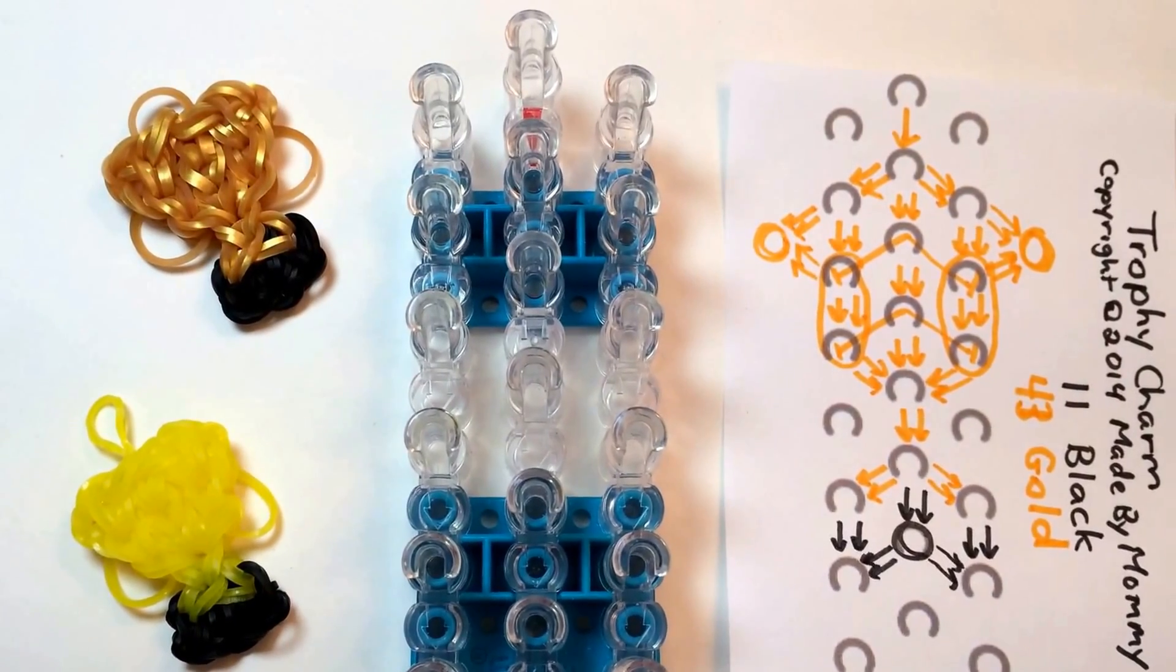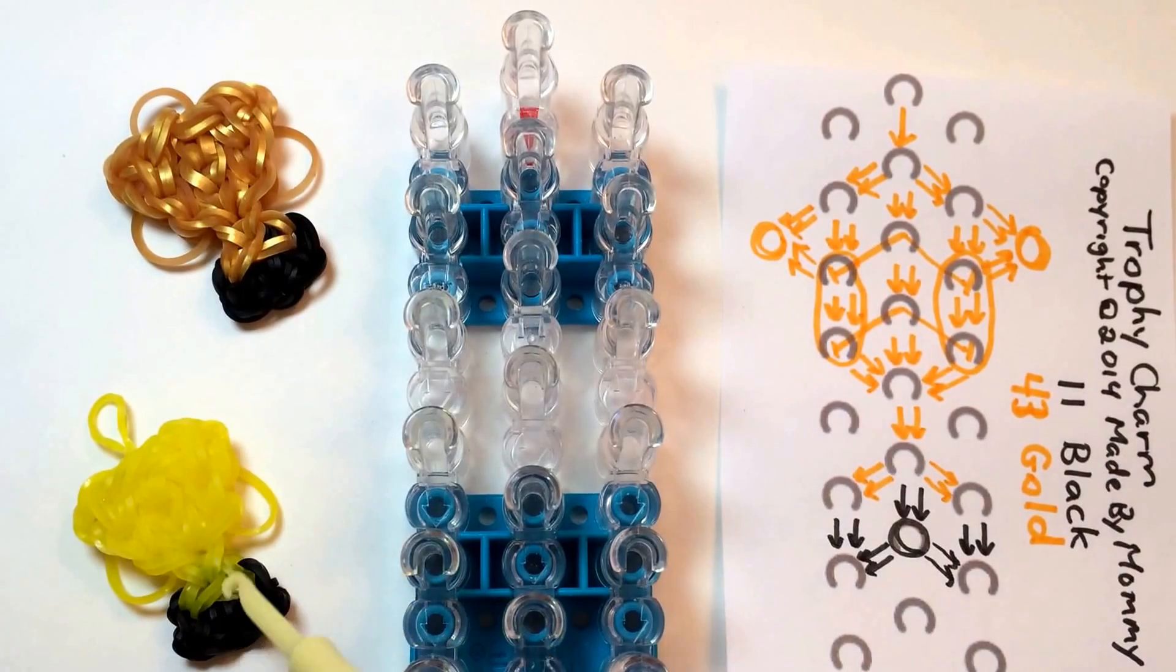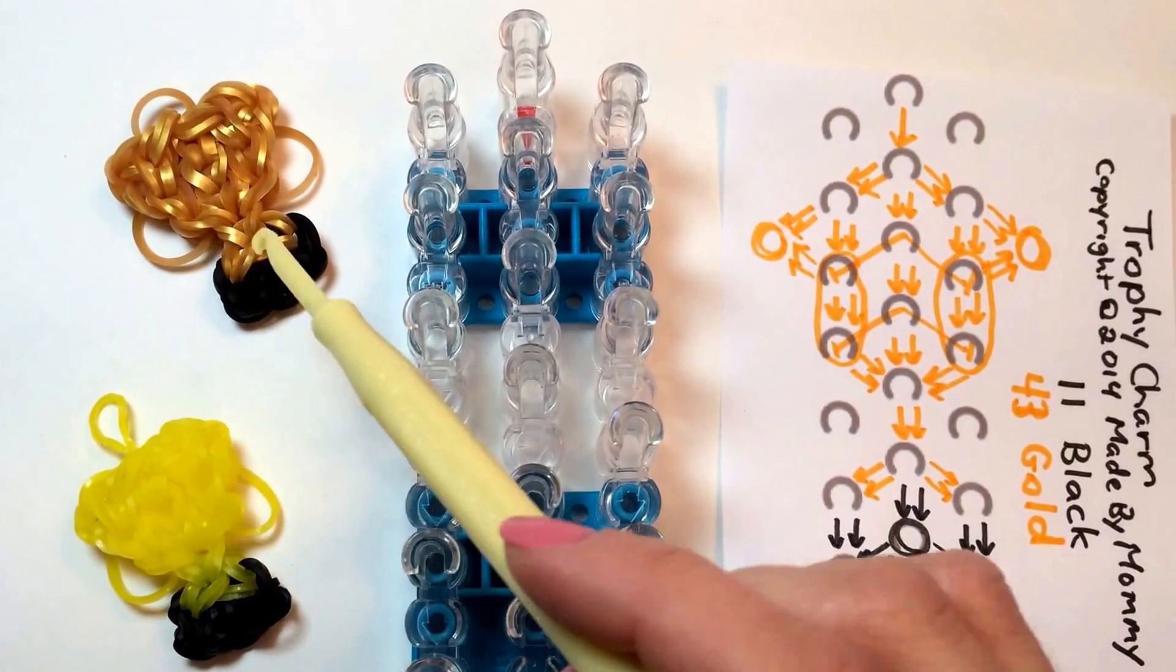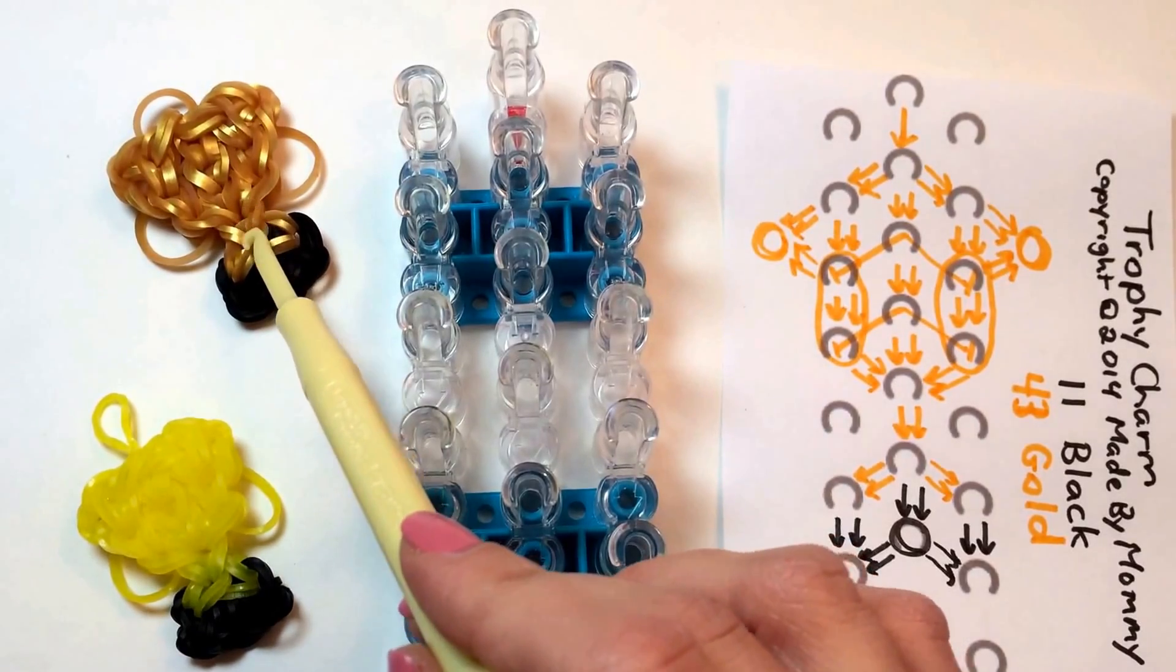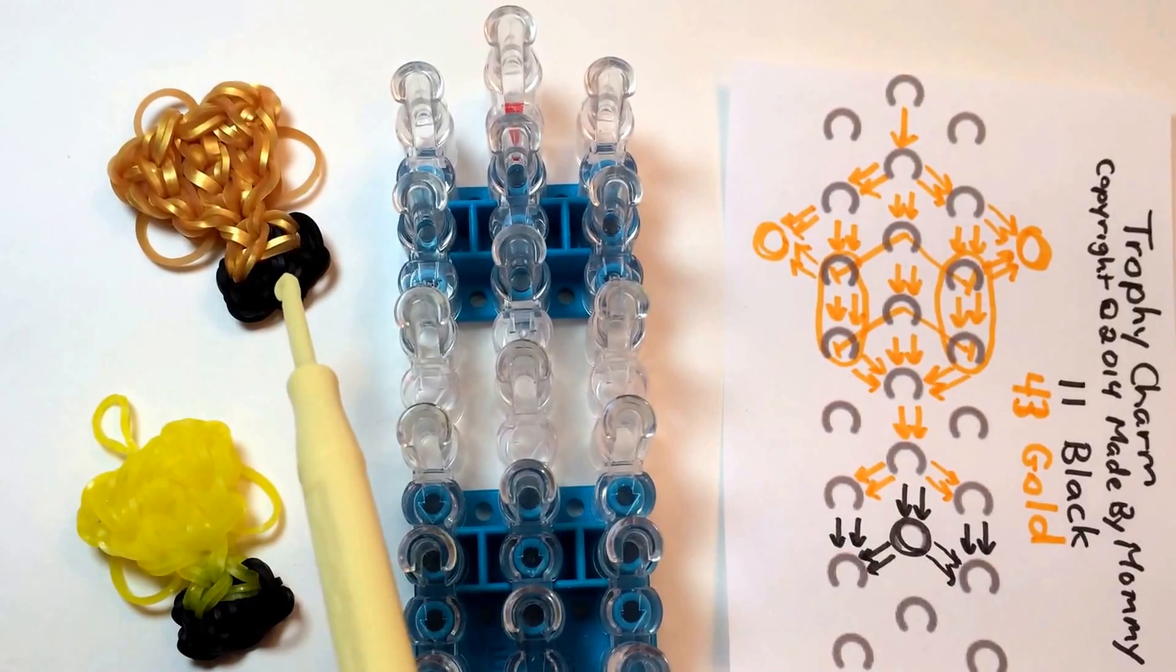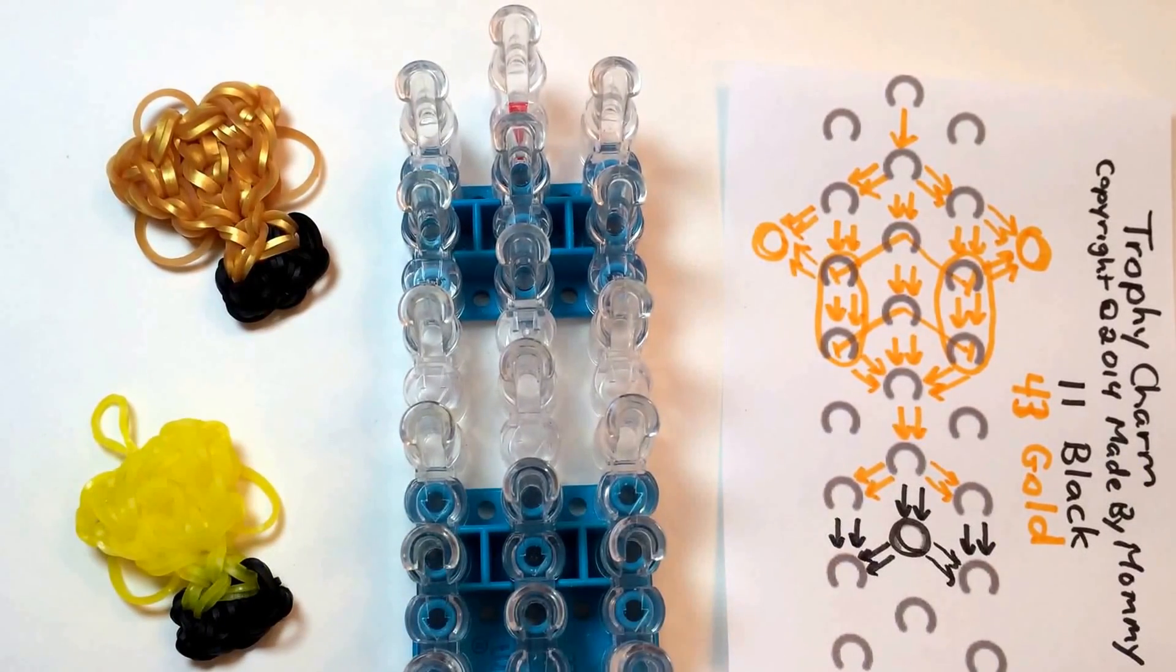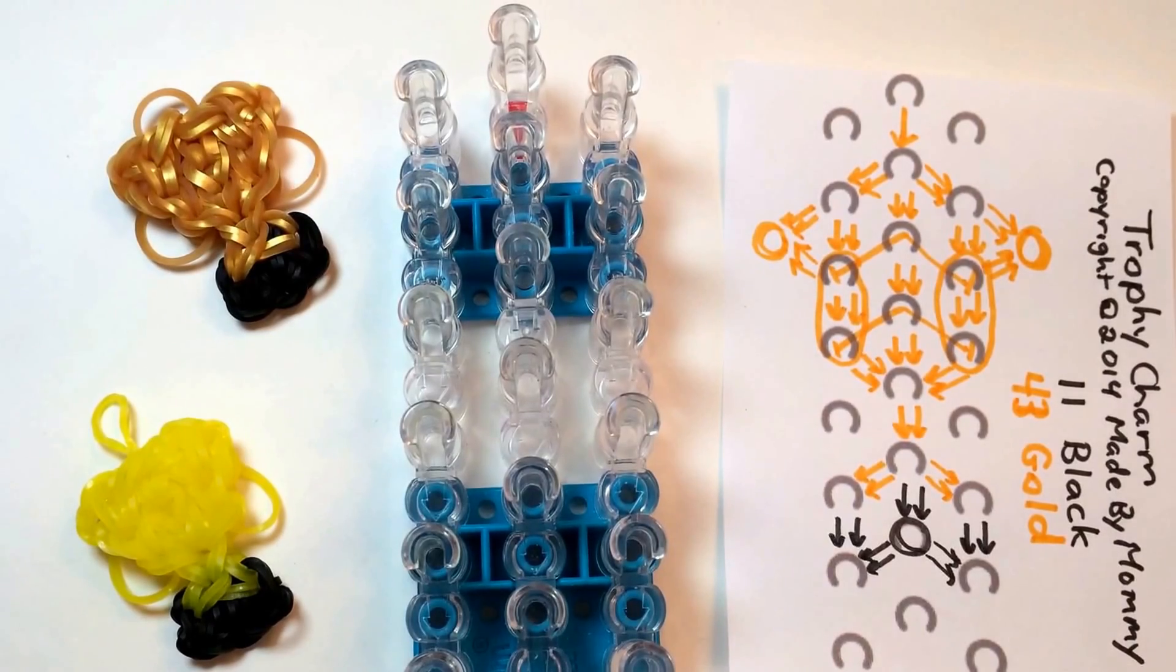To make this charm, you'll need 11 rubber bands in the color you want the base of your trophy to be, and 43 rubber bands in the color you want the trophy itself to be. I made these with all rainbow loom brand rubber bands. These are the limited edition metallic gold bands, these are the jelly yellow, and I used black for both of the bases. You could also use brown to be a wood base. I'm going to make the charm in this video using rainbow loom brand gray to represent a silver trophy instead.